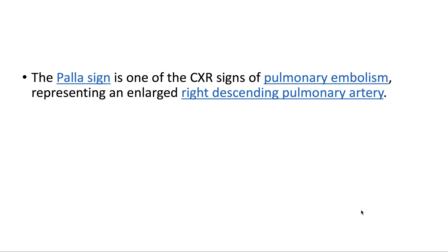Palla's sign is one of the chest x-ray signs of pulmonary embolism, representing an enlarged right descending pulmonary artery. On CTA, we have 3.